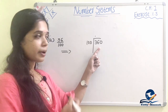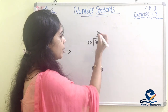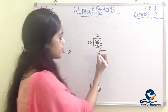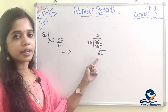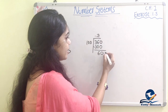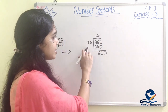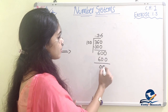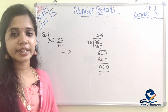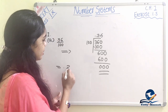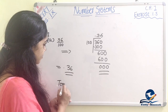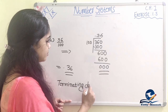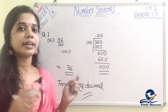Number one. Then we continue the decimal division. In the same way, 3 times gives 300, and 6 times gives 600. So 36 by 100 is going to be 0.36. This is the terminating decimal. So here we get a terminating decimal.